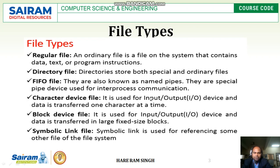Next one is a character device file. It is used for input or output devices and data is transferred one character at a time. Next one is a block device file. It is used for input or output devices and data is transferred in large fixed-size blocks, like 2MB, 3MB, or 60MB of data.